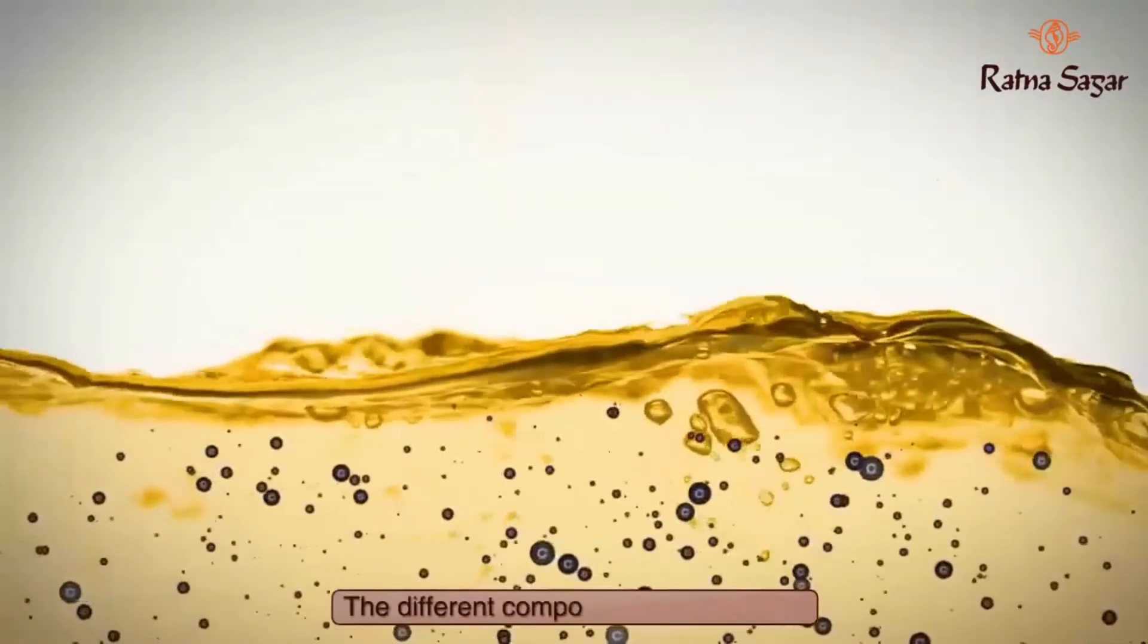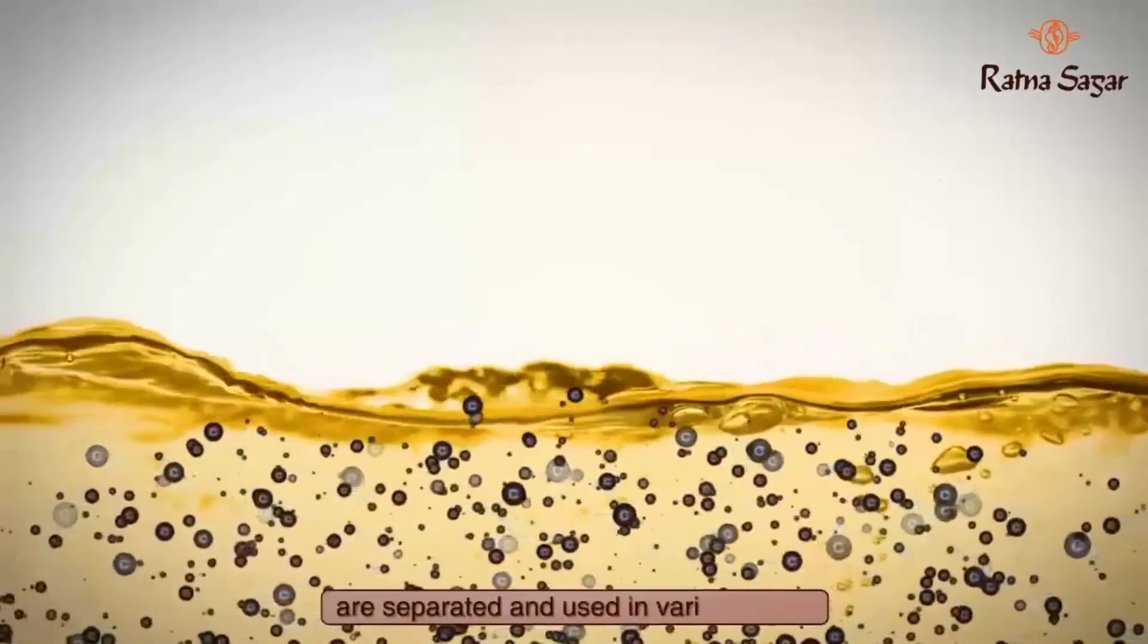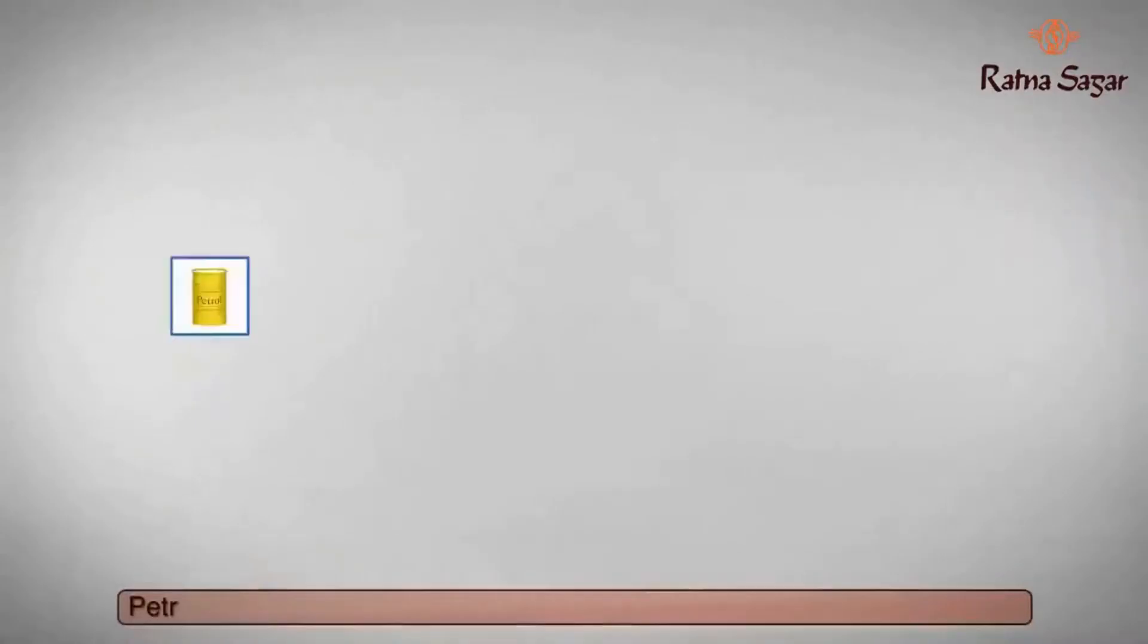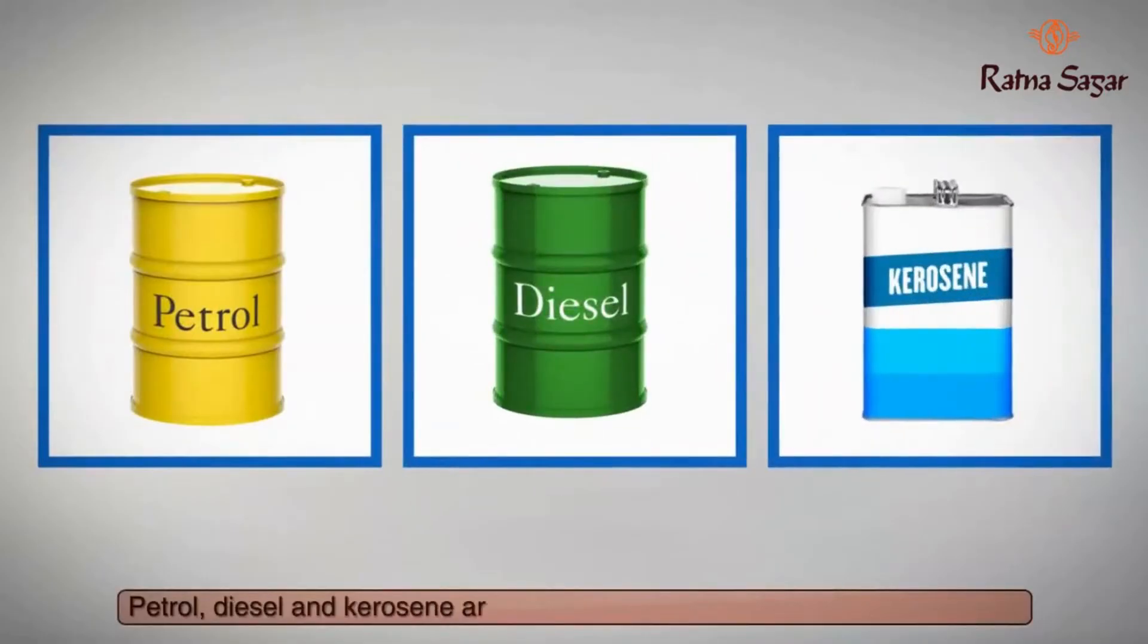The different components in petroleum are separated and used in various ways. Petrol, diesel, kerosene are some of the fuels obtained from petroleum.